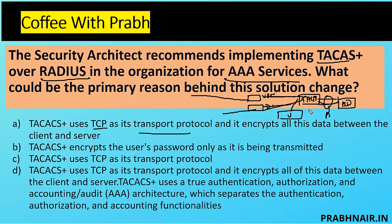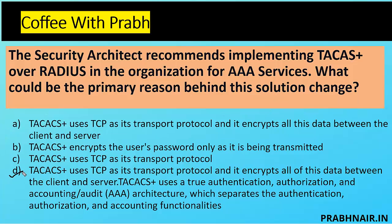With RADIUS, the information exchanged between RADIUS and AD is sent in plain text. RADIUS also uses UDP, which has a probability of connection drop, whereas TACACS+ uses TCP. Option A says TACACS+ uses TCP and encrypts all data between client and server — that can be the answer. Option B says TACACS+ encrypts the user password only, which is common in RADIUS — so B is removed. Option D says TACACS+ uses TCP, encrypts all data between client and server, and uses a true AAA architecture that separates authentication, authorization, and accounting.